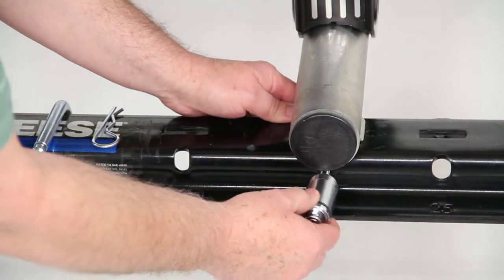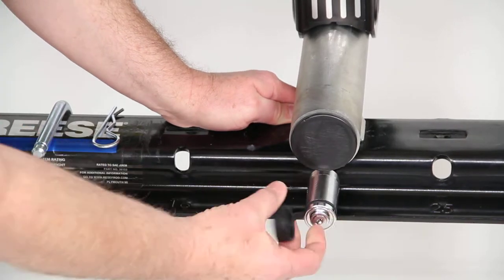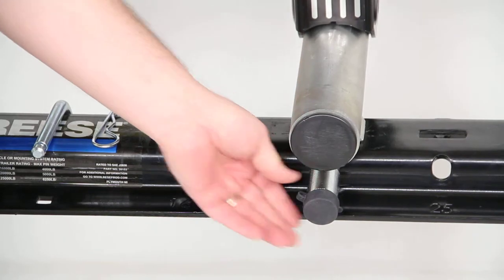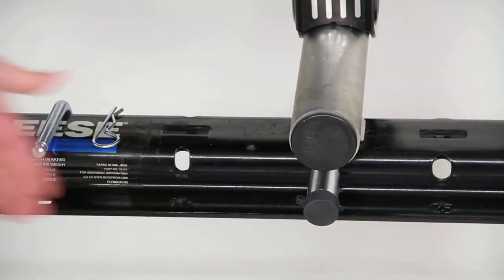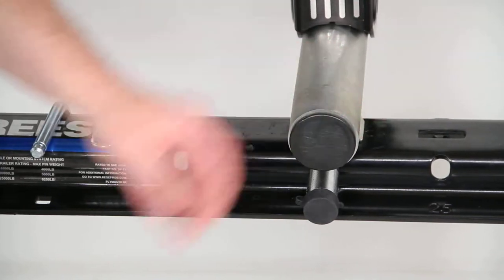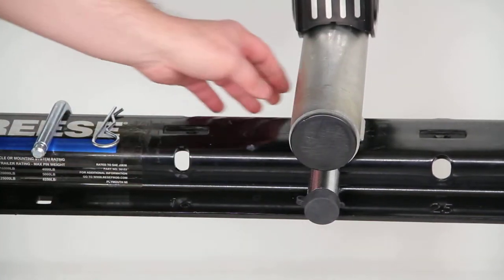Push it and it locks into place. You can put the cover on it. All you really need is one of these. You could do all four if you want, but actually one would work fine to keep anybody from removing the fifth wheel hitch from your rails.